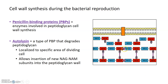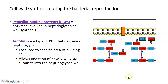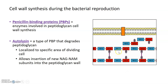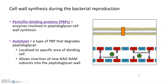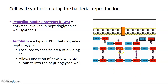Autolysins specifically degrade parts of the cell wall along the midline of the dividing cell, allowing insertion of new NAG and NAM subunits into the peptidoglycan wall at a very specific location. Autolysins are highly regulated because while they need to degrade peptidoglycan, they must do so in a small and localized manner.